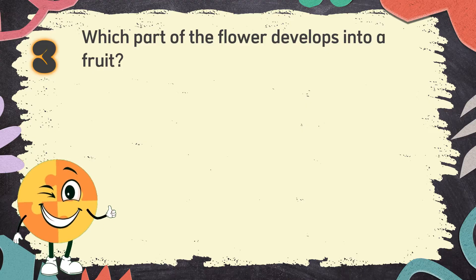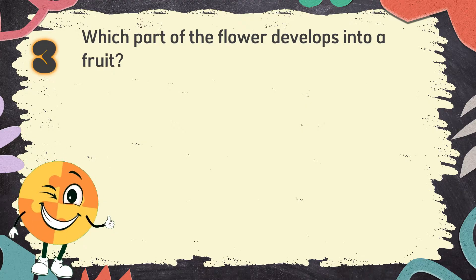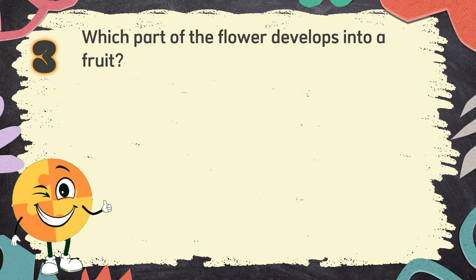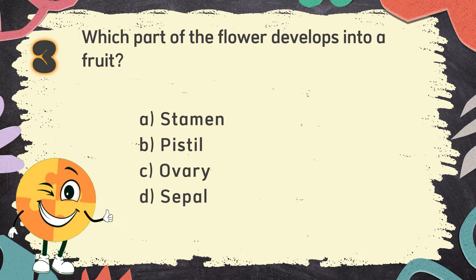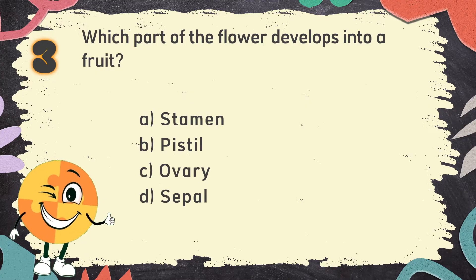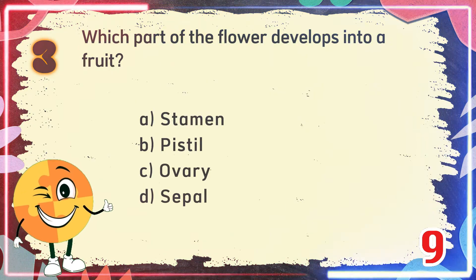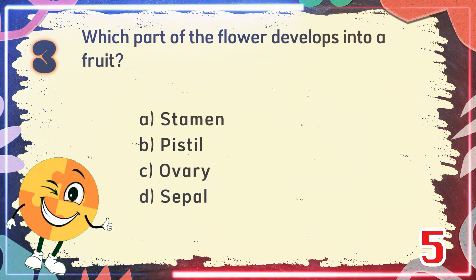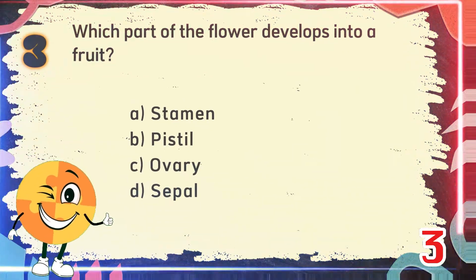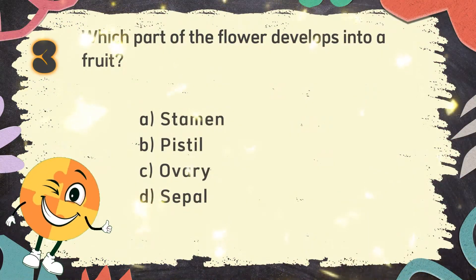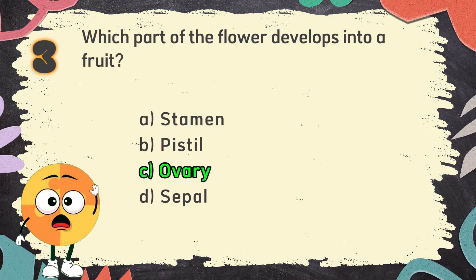Number 3: Which part of the flower develops into a fruit? The choices are: A. Stamen, B. Pistil, C. Ovary, D. Sepal. The correct answer is C. Ovary.